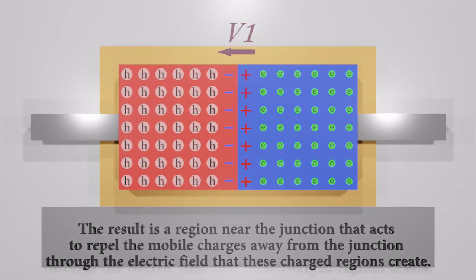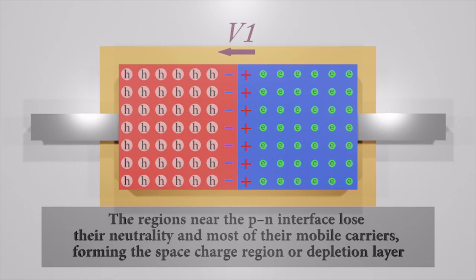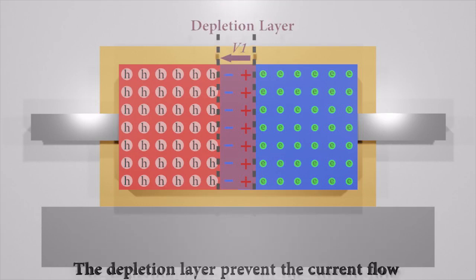The region near the p-n interface loses its neutrality and most of its mobile carriers, forming the depletion layer. The depletion region is devoid of available charges and carriers and acts as an insulator.